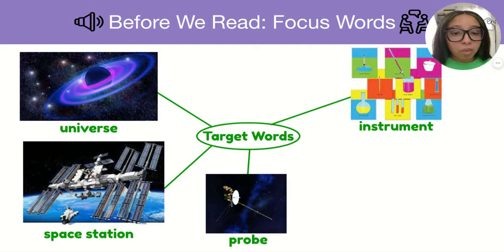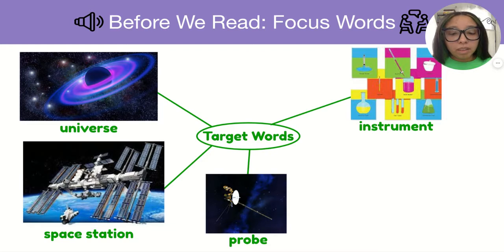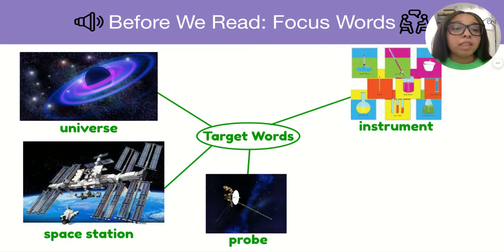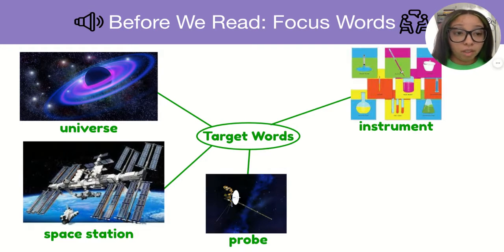Probe. A probe is an instrument that scientists use to land on a particular planet or to be in outer space in order to collect data, and they receive that information via radio waves.